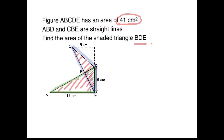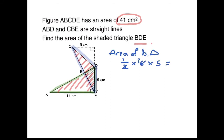41 square centimeters is the area of this entire shaded figure, which includes BDE. But remember, the two triangles — green and blue — are overlapping each other. So step number one, I'm going to find the area of the blue triangle by taking half times base, which is 6, and the height, which is 5 centimeters. So I get 15.